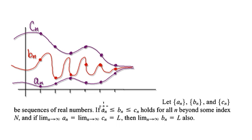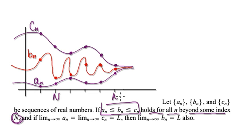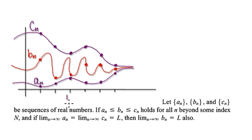What the squeeze theorem is saying is that if the inequality a_n ≤ b_n ≤ c_n holds for all n beyond some index capital N — and capital N could be anywhere along the sequence — then you can apply the squeeze theorem.